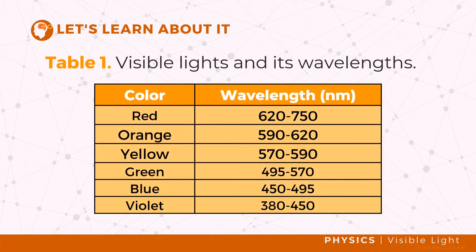In this table you can see the arrangement of colors depending on their wavelength. Red has the longest wavelength while violet has the shortest. We can recall that frequency is inversely proportional to wavelength — this means that even though red has the longest wavelength, it has the lowest frequency, while violet has the greatest frequency.